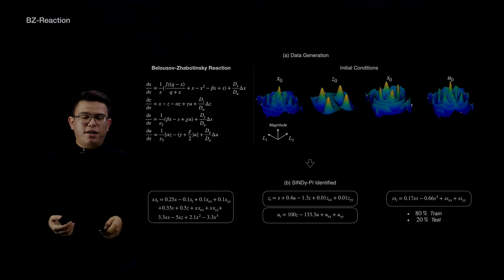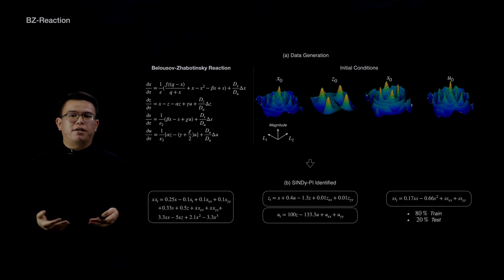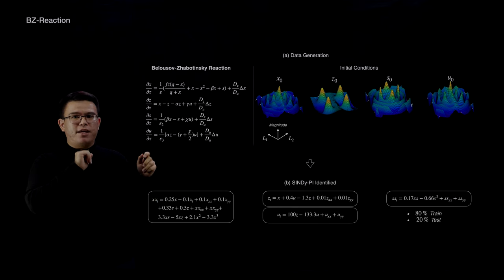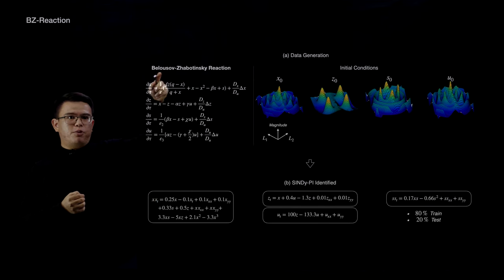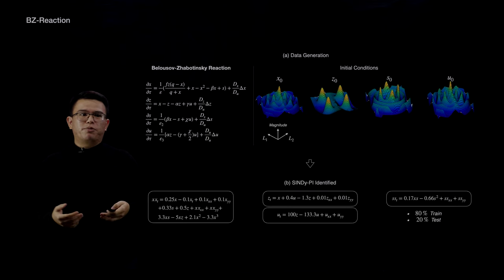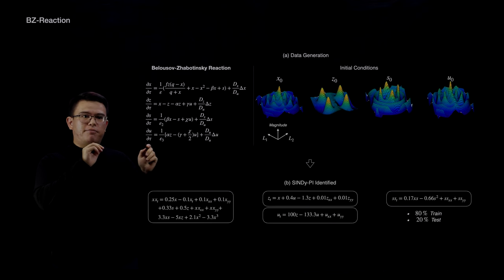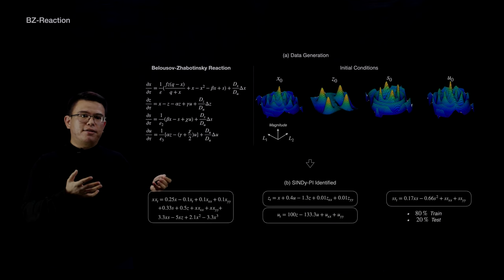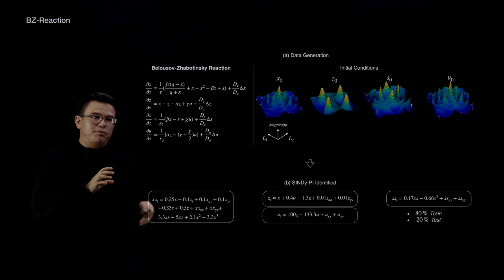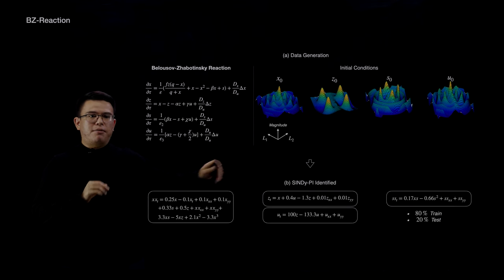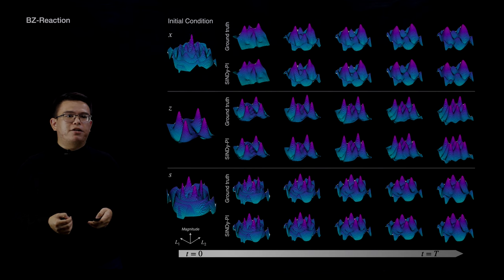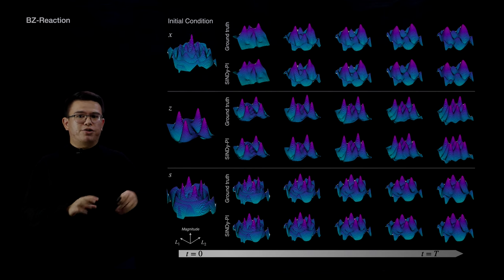We then challenged ourselves with the BZ reaction—a really complicated chemical reaction model. Its simplified PDE equations contain a rational term that could not be identified using PDE-FIND before. We simulated data in MATLAB and provided it to CINDY-PI, which correctly identified both the rational implicit equation and the remaining dynamics. When we simulate the identified equations in MATLAB, the results match really well with the ground truth.